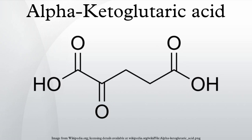Glutamine is synthesized from glutamate by glutamine synthetase, which utilizes an ATP to form glutamyl phosphate. This intermediate is attacked by ammonia as a nucleophile, giving glutamine and inorganic phosphate.